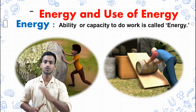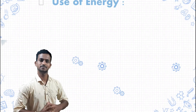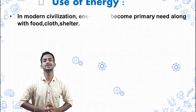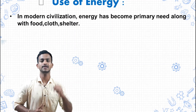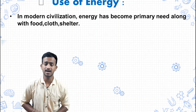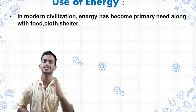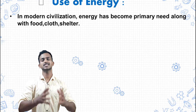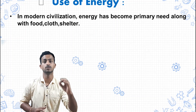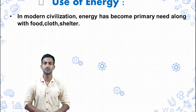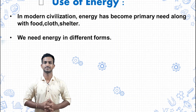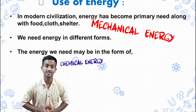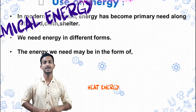Now we will see the use of energy. In modern civilization, energy has become a primary need along with food, shelter, and cloth. We need energy in different forms — the energy we need may be in the form of mechanical energy, chemical energy, sound energy, heat energy, and light energy.